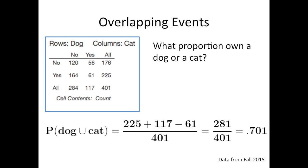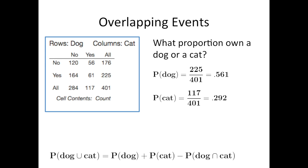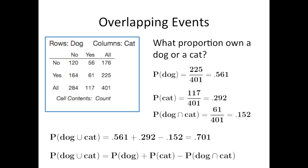We could also solve this problem using the formulas. Dog and cat ownership are not disjoint events — we have 61 people who own both. So we use the second formula: the proportion who own a dog or a cat equals the proportion that own a dog plus the proportion that own a cat minus the proportion that own both. 225 out of 401 own a dog, so 0.561; 117 out of 401 own a cat, so 0.292; and 61 out of 401 own both, so 0.152. Plugging into the formula gives us 0.701. When you have a contingency table, you can use the formulas, although it's often quicker to take the numbers directly off the table.